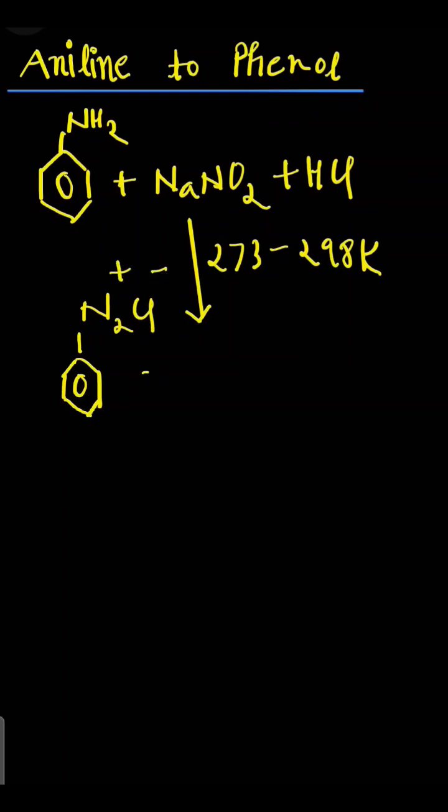where N2 is positive, Cl is negative. Sodium chloride will be eliminated as a byproduct along with water.